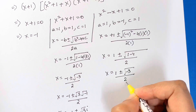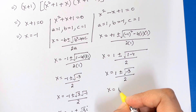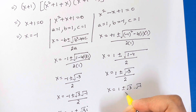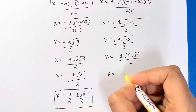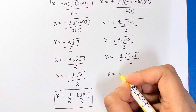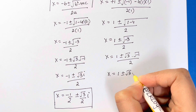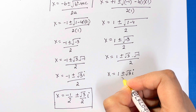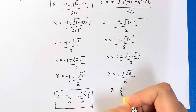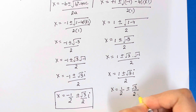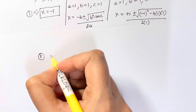We get x = (1 ± √(-3)) / 2 = (1 ± √3·√(-1)) / 2. Since √(-1) = i, this becomes x = (1 ± √3·i) / 2, written as x = 1/2 ± (√3/2)i.